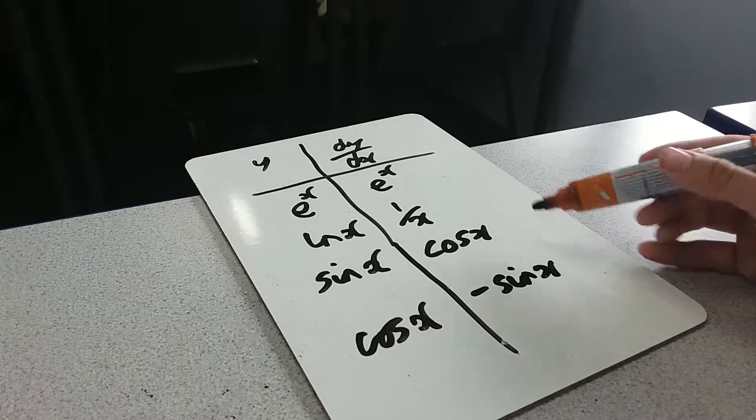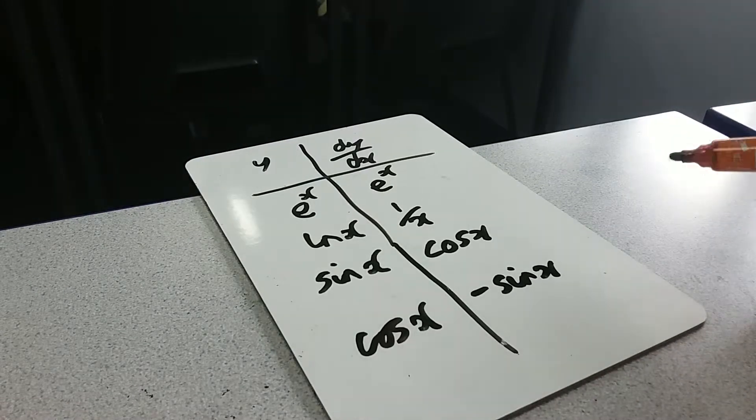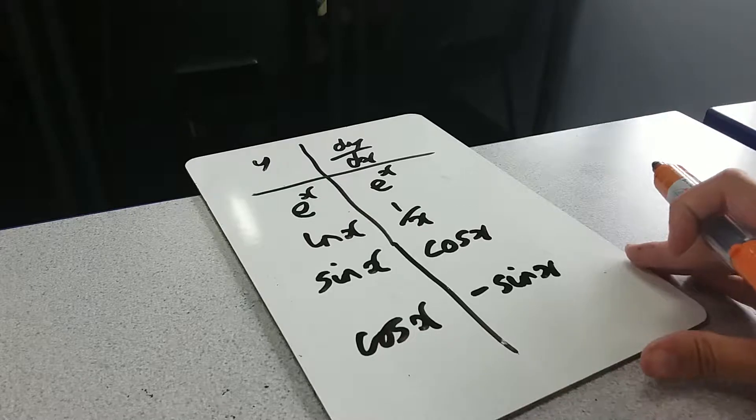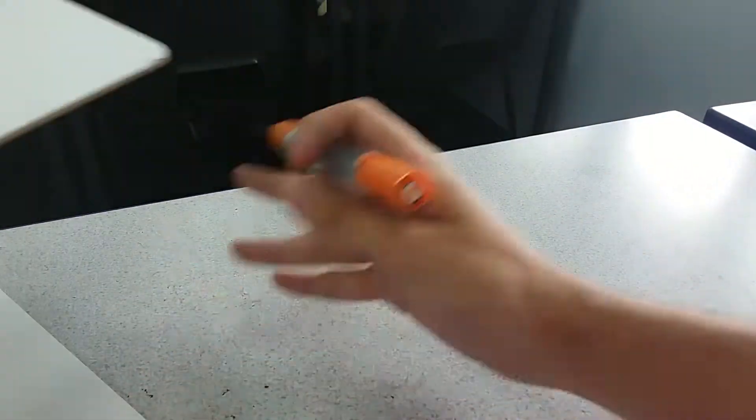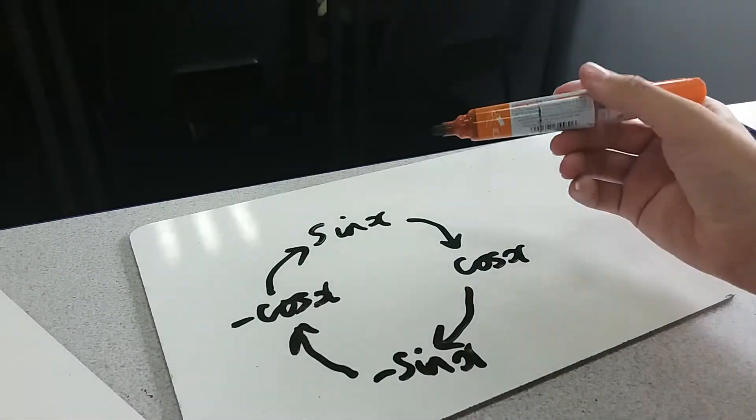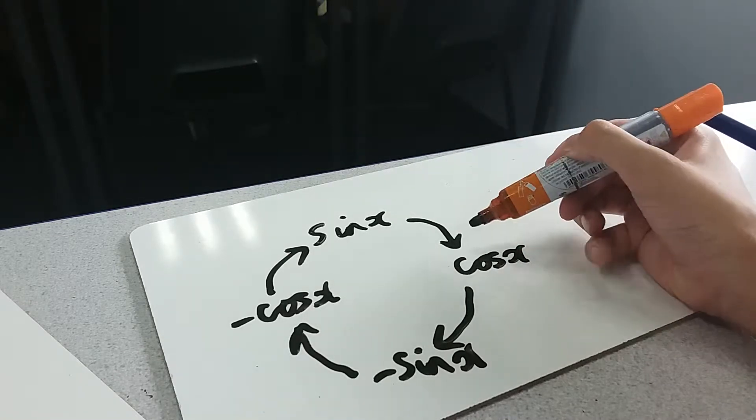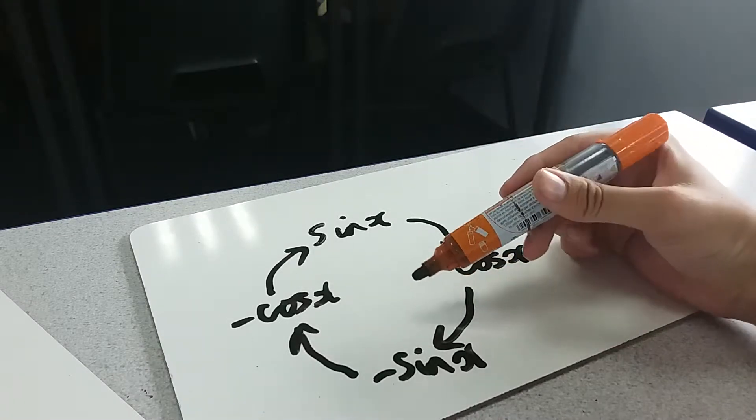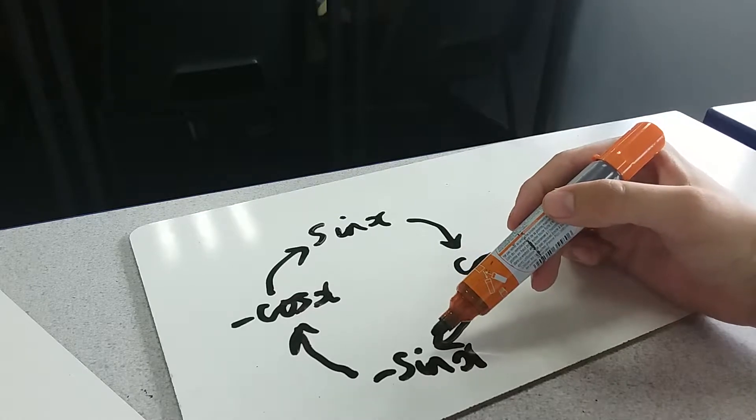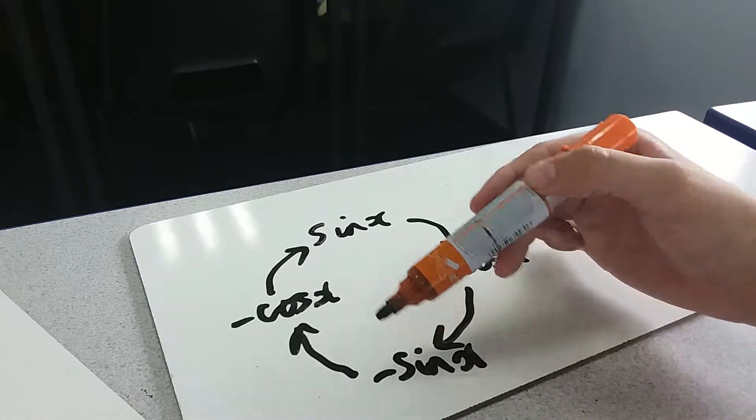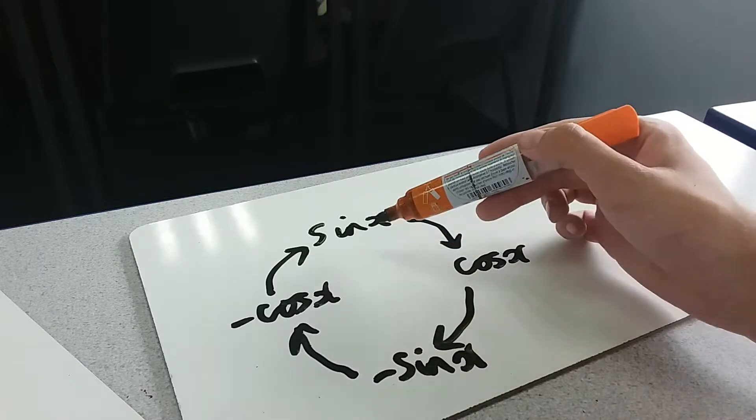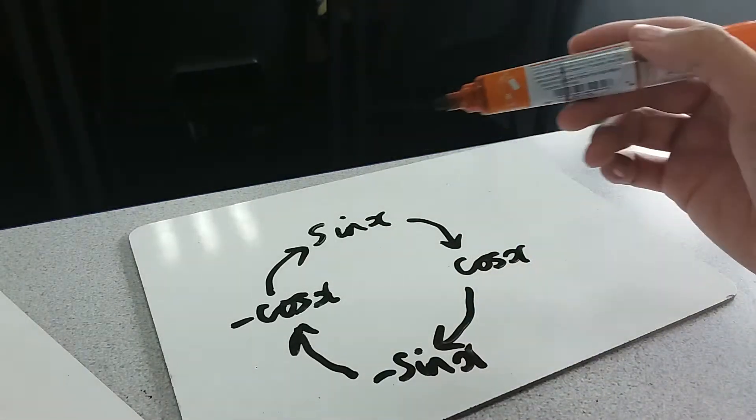Just a quick thing on these trig functions. The way that I usually picture it is as a little circle like this. So differentiating, going around the circle, from sine x you go to cos x. From cos x you go to minus sine x. Minus sine x, well sine x differentiates to cos, so if you stick a minus in front of it, it's going to go to minus cos. And then minus cos goes back to sine. So you're just going around the circle.